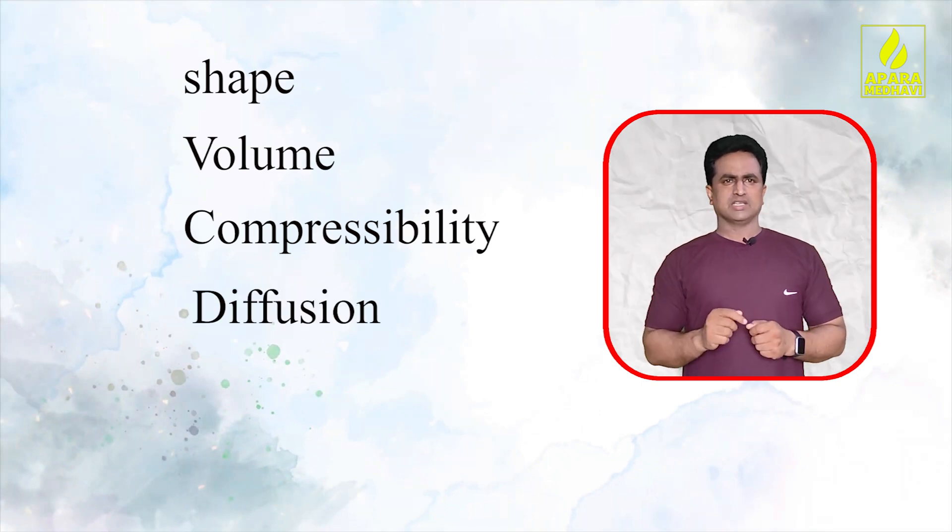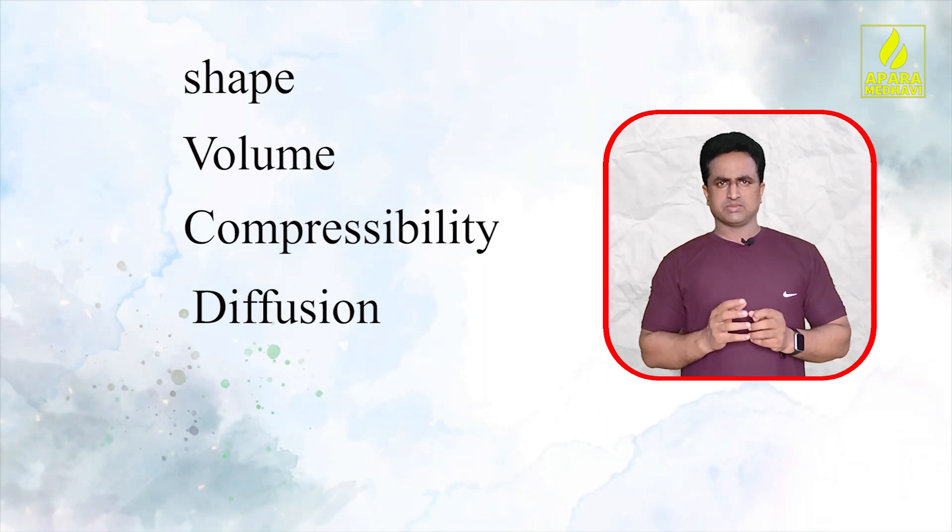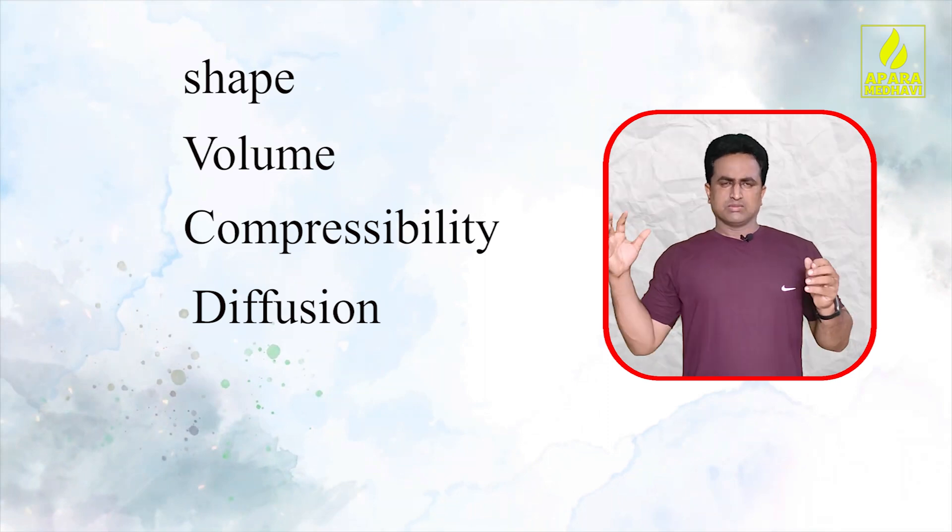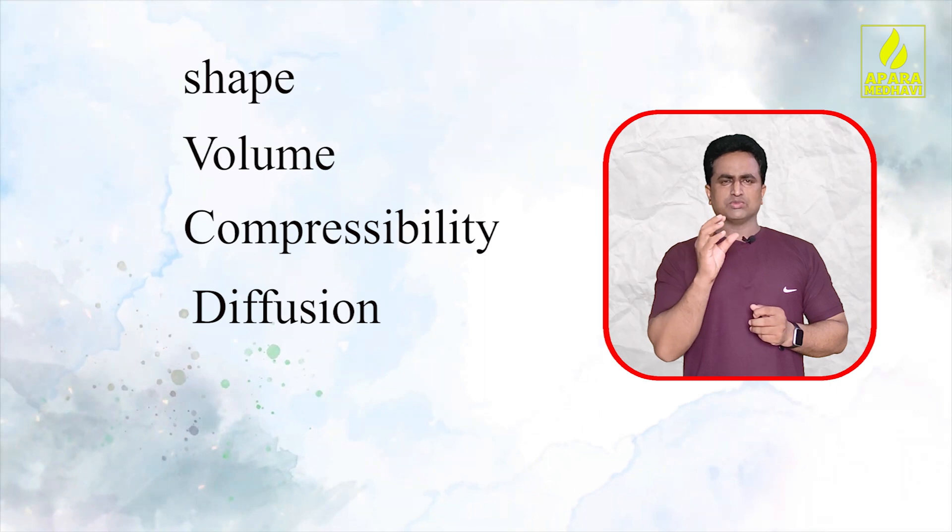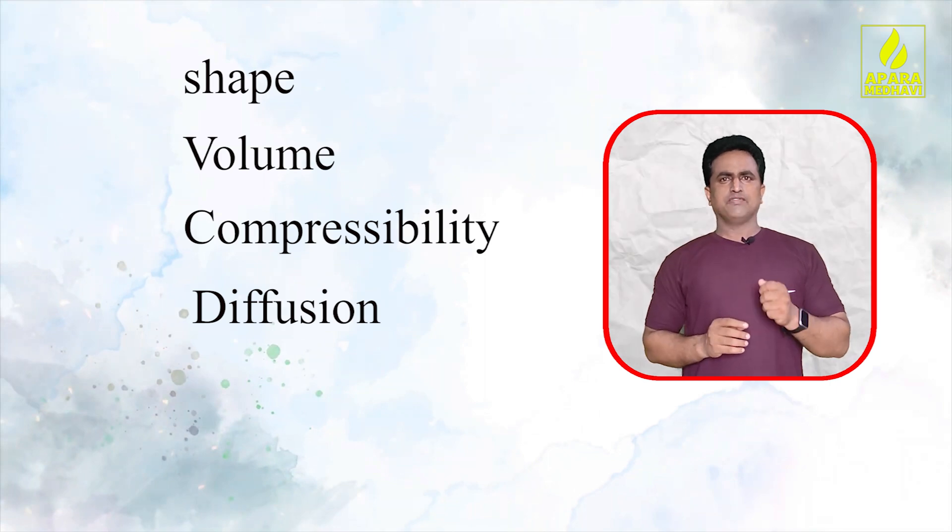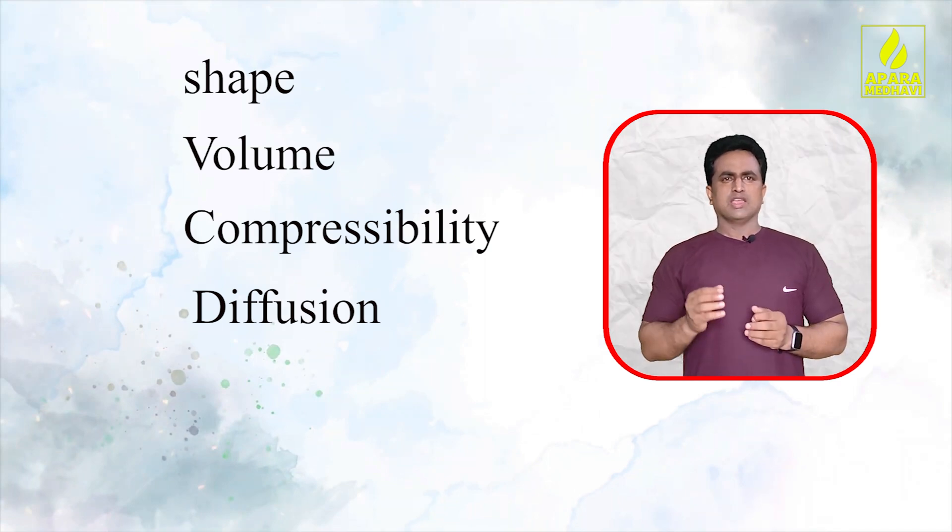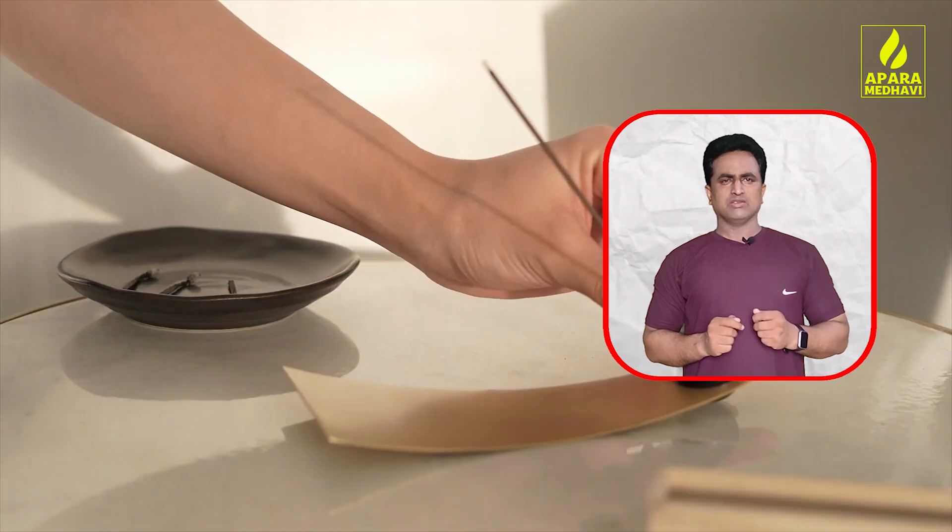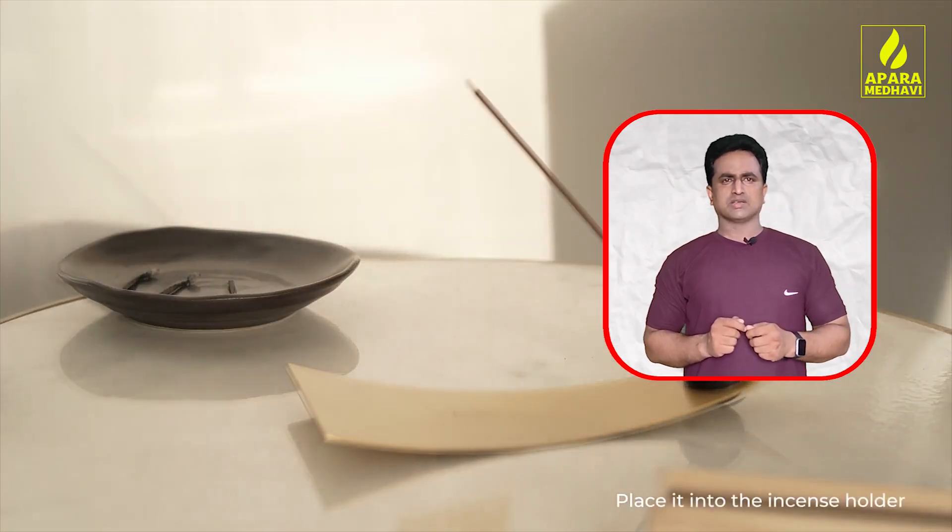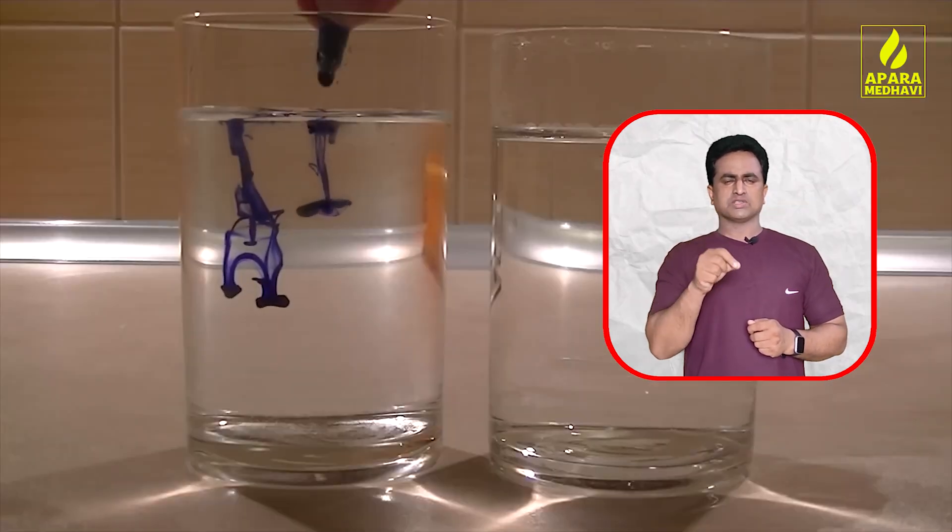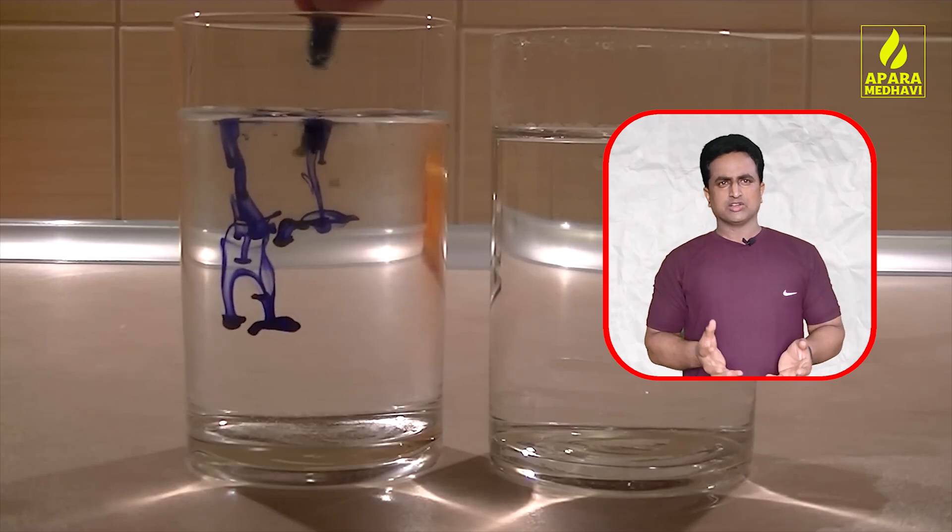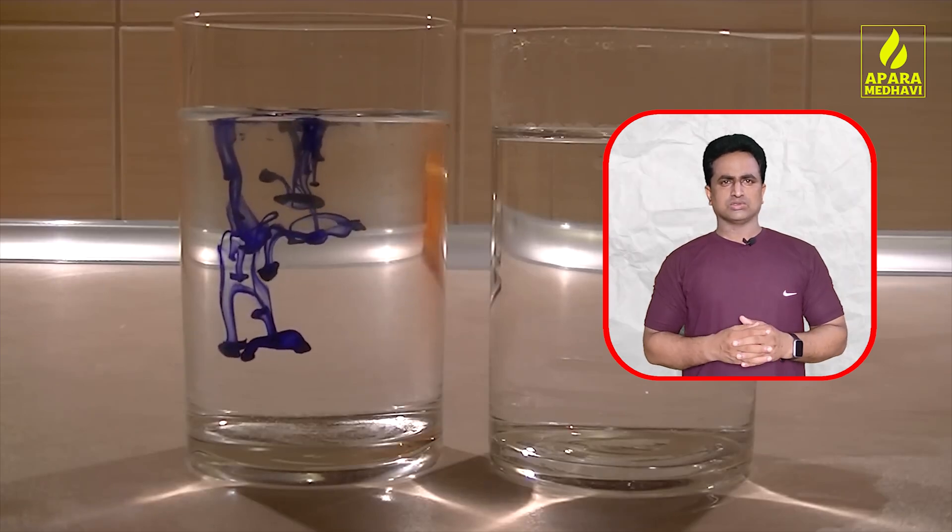Shape refers to the boundary of matter. Volume is the space occupied. Compressibility means reducing the volume by applying pressure. Diffusion means particles spread out uniformly, for example, when we light an agarbathi (incense stick), the fragrance spreads throughout the room.